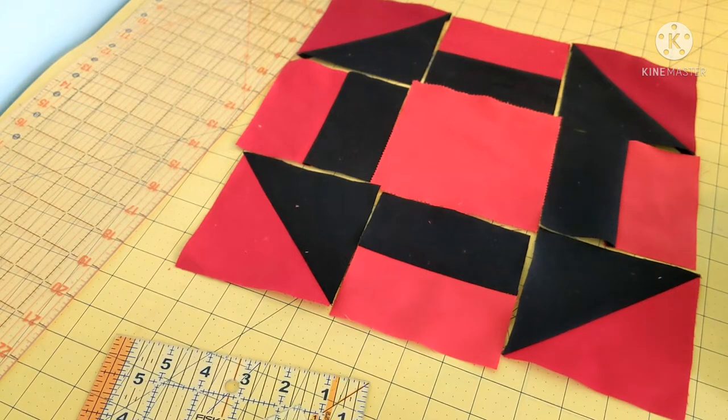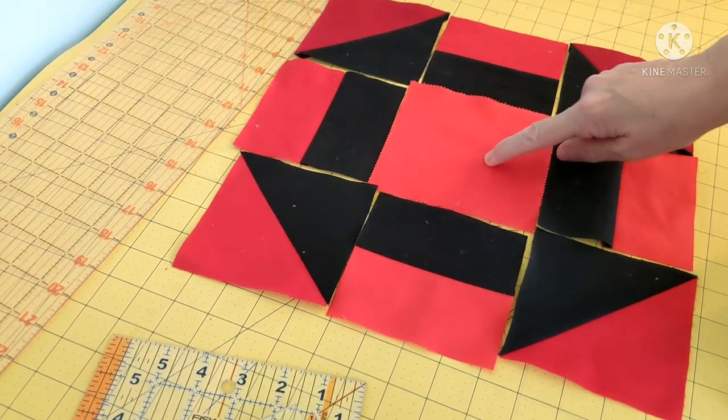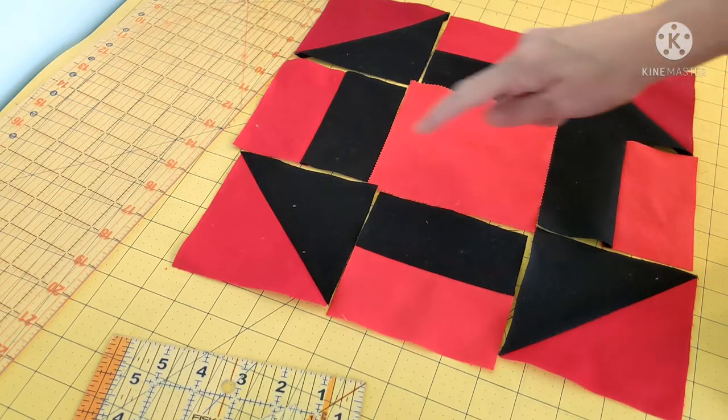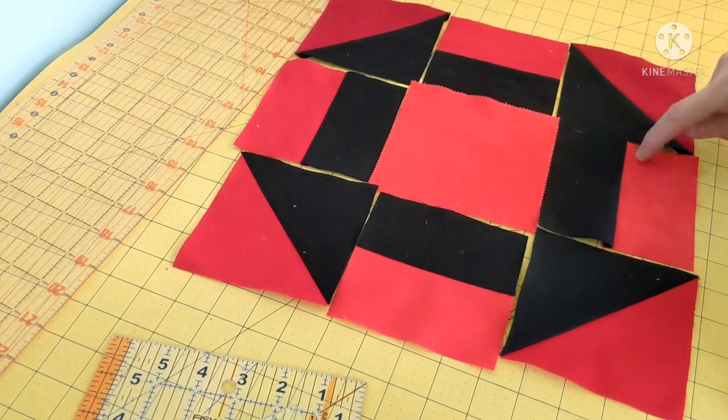We are going to use this. The first thing I have to do is I have to square this center block up to four and a half, and then I will sew the rows.